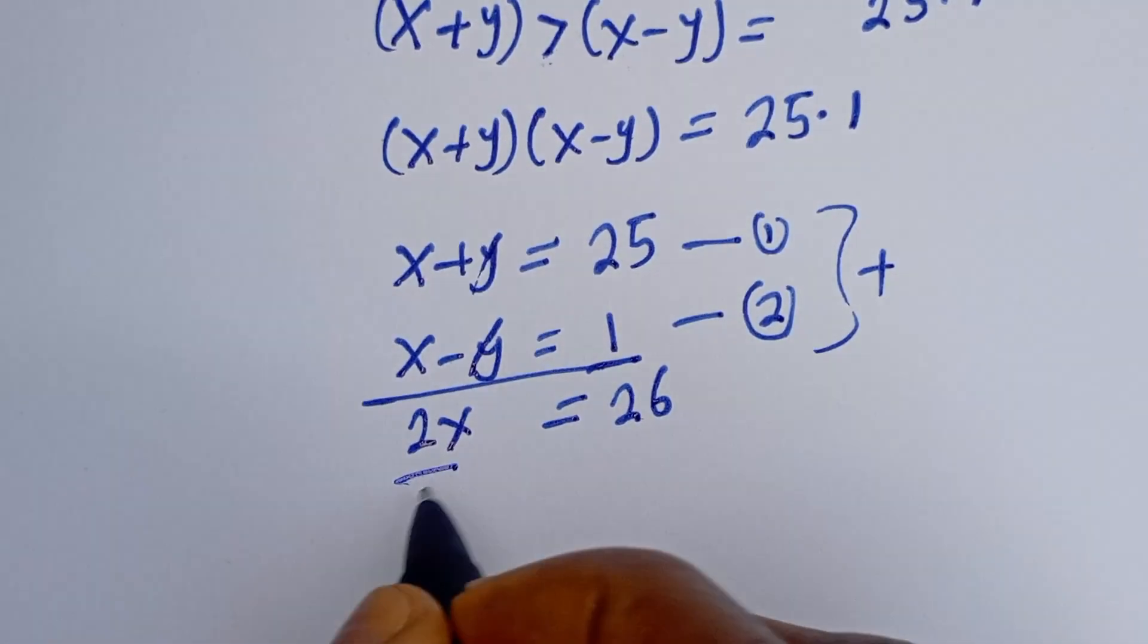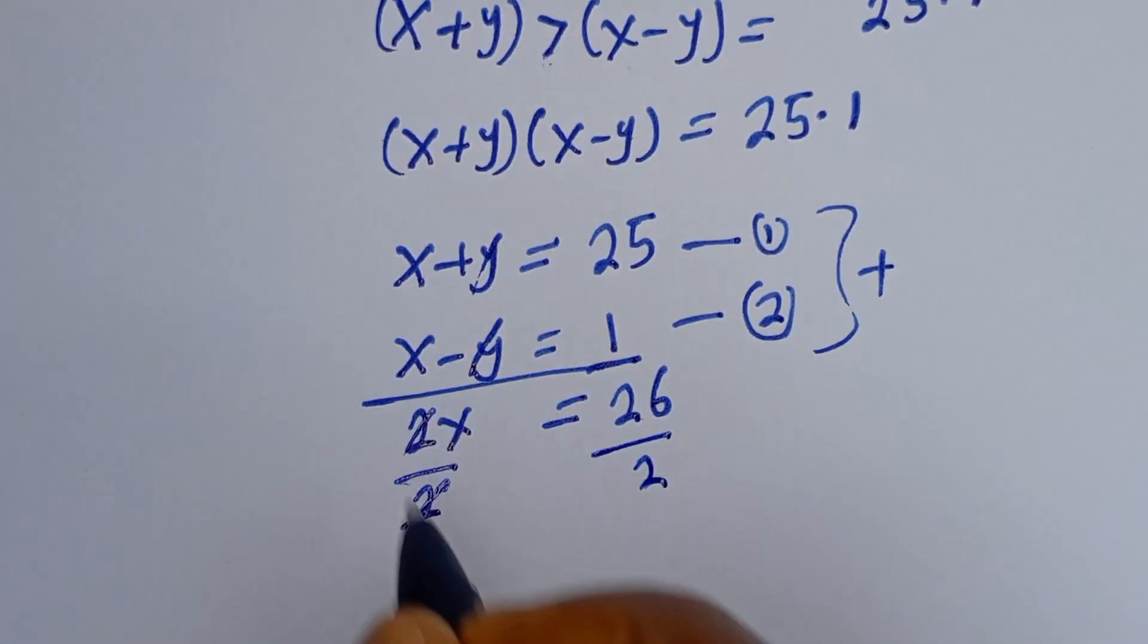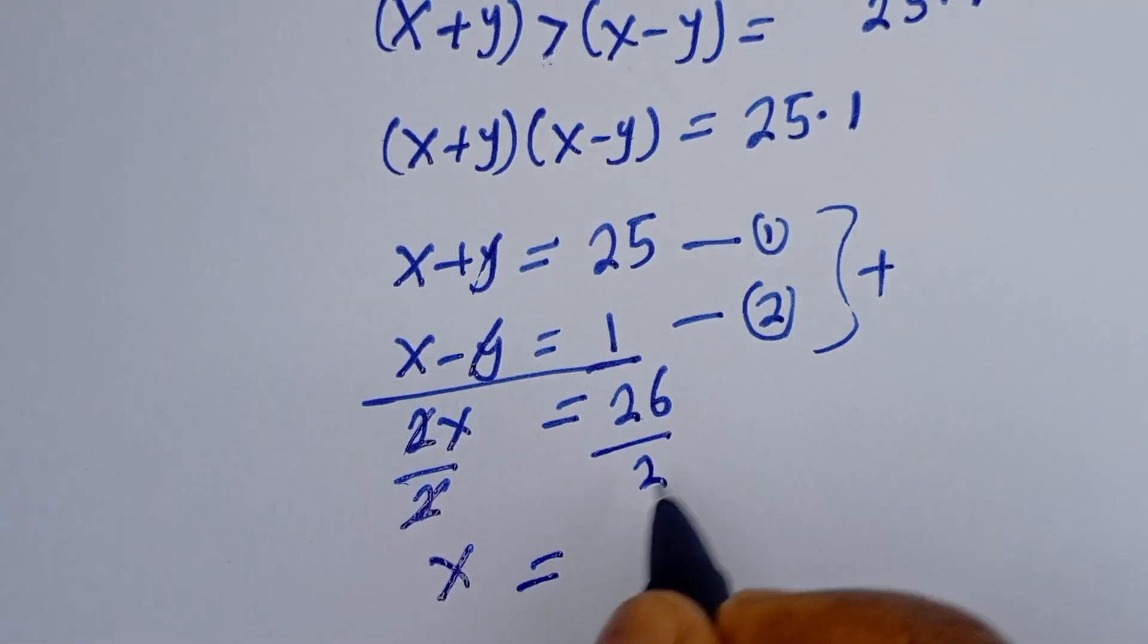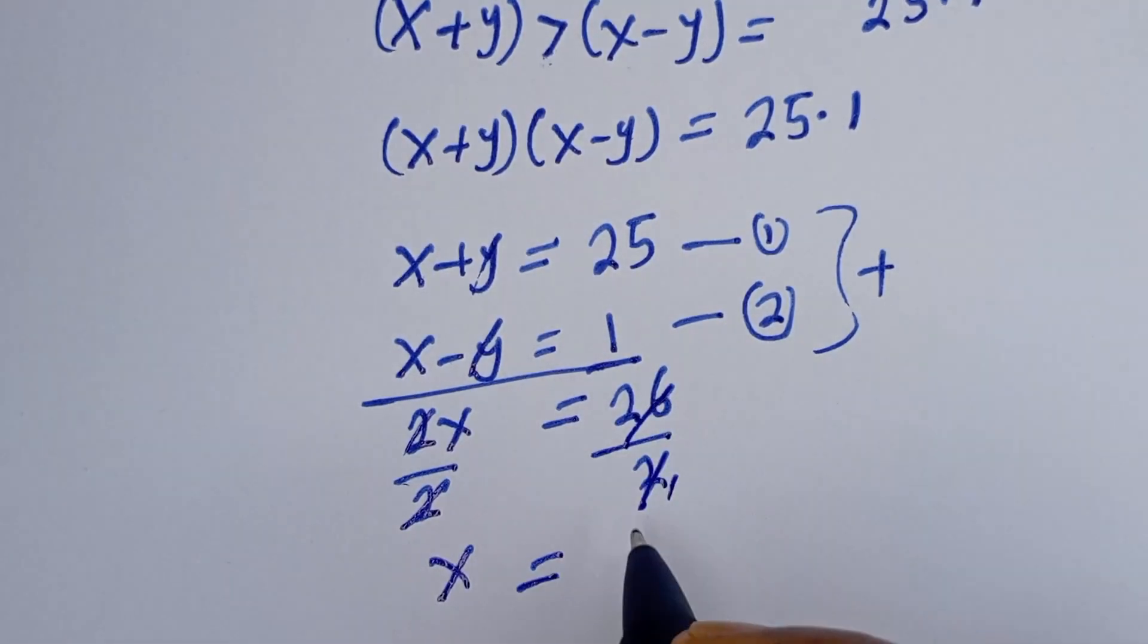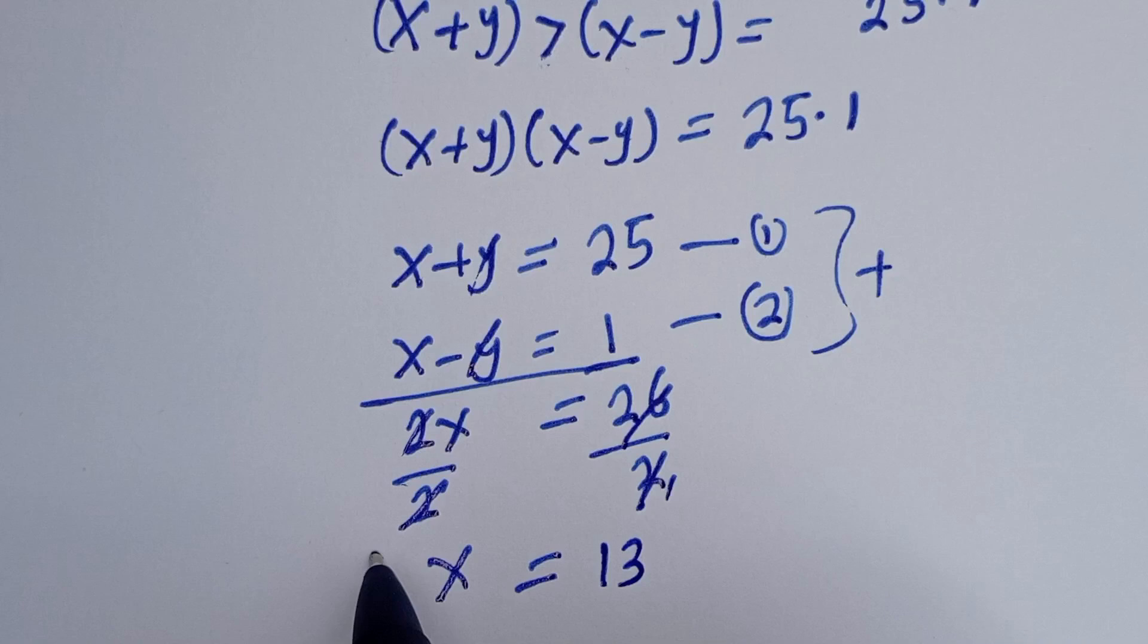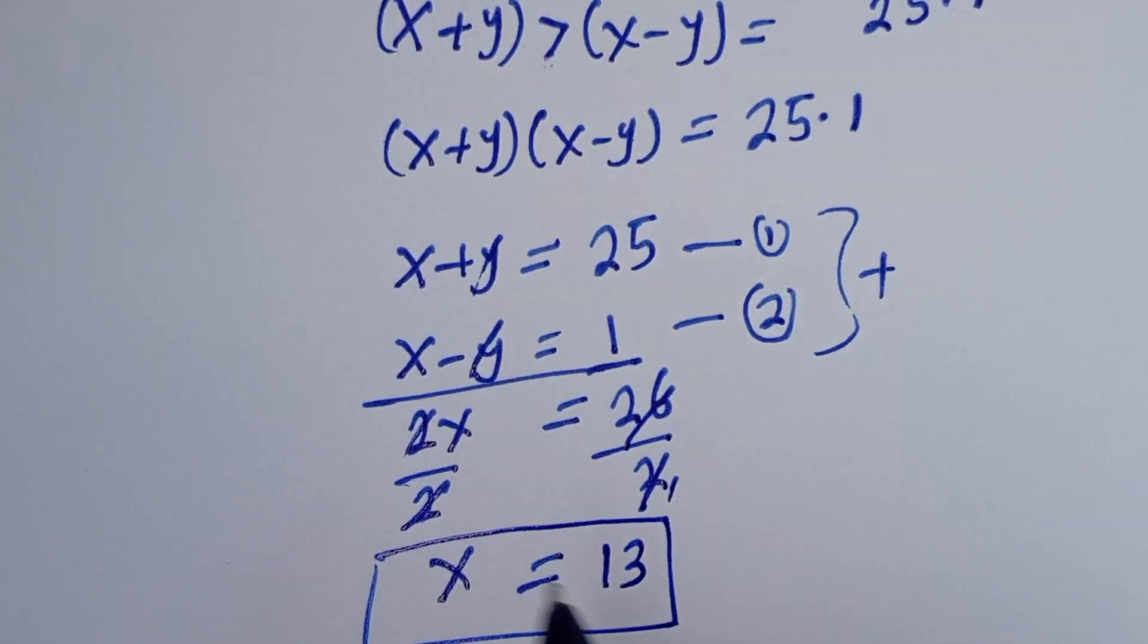Then let's divide both sides by 2. This will cancel. X equals 26 divided by 2, X equals 13. This is the value of X.